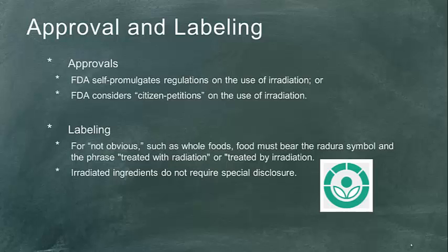You may have noticed a symbol at the beginning of this presentation. The FDA has a labeling requirement with two components. The symbol is called the radura, and it is required along with one of these phrases: 'treated with radiation' or 'treated by irradiation' — for whole foods. So if you have a bag of salad that's been irradiated, it would need to have this symbol and one of these phrases. However, if you have a box of cereal or a baked good where one ingredient — say, the flour — has been irradiated, there is no special disclosure requirement: no symbol, no phrases needed.